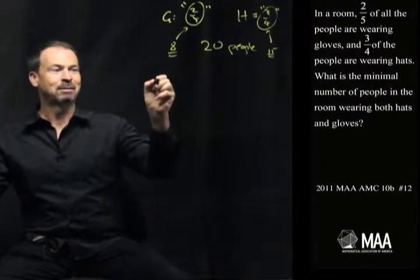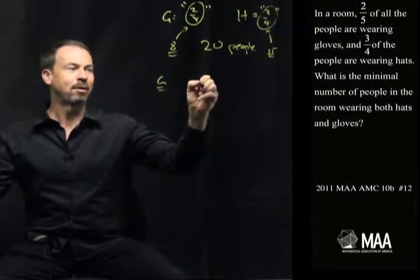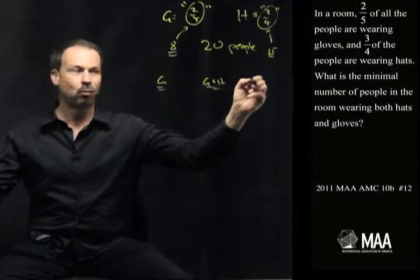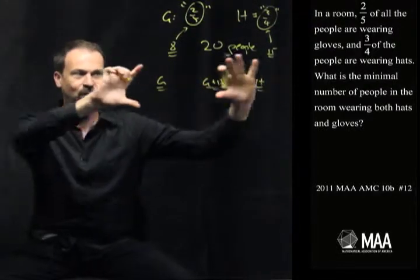Alright, so I'm going to do some scenarios. So the people that are wearing just gloves only, there's some people that are wearing gloves and hats, and some people wearing hats only. So I'll do like three tables, something like this.